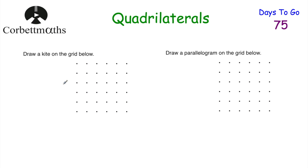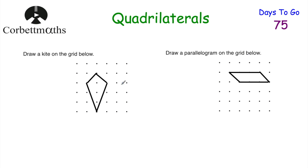Here are two questions: draw a kite on the grid, and draw a parallelogram on the grid. Pause the video and try that now. This is the kite I drew — yours might look slightly different, but as long as it's a kite. And this is the parallelogram I drew. Well done if you got those right.